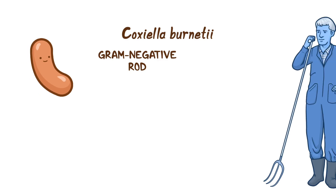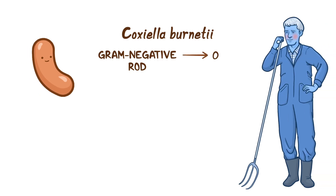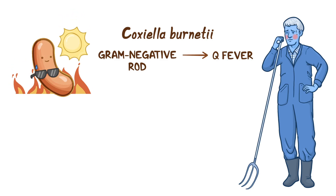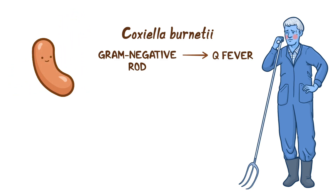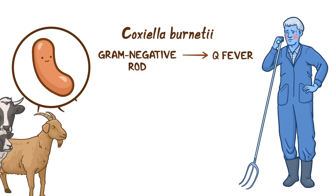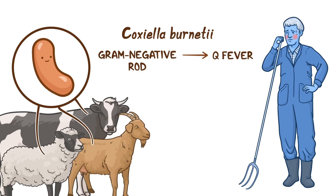Coxiella burnetii is a gram-negative rod that causes a condition called Q fever. This bacterium is highly resistant to environmental stressors, including high temperatures and ultraviolet light, and spreads to humans from animals like cows, sheep, and goats. So Q fever is considered a zoonotic infection.